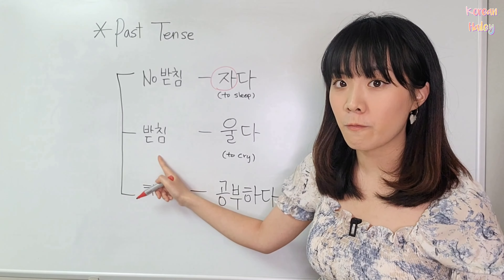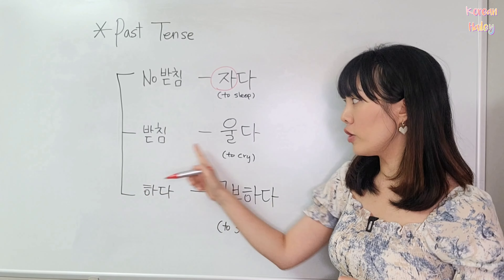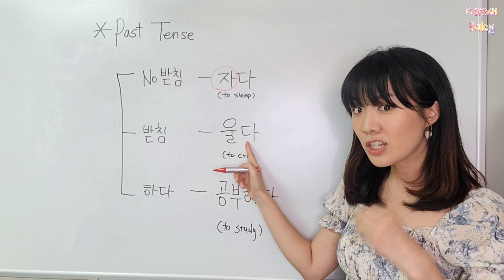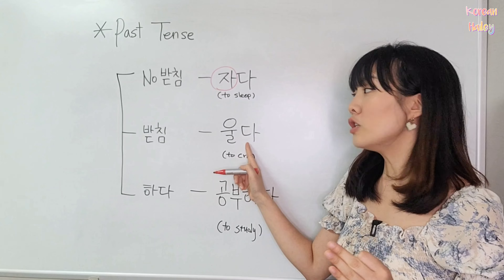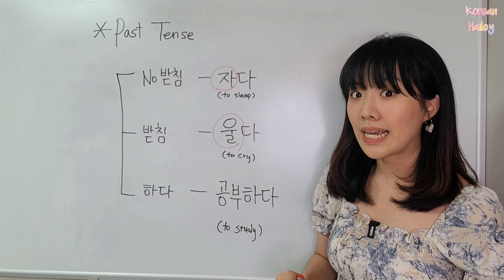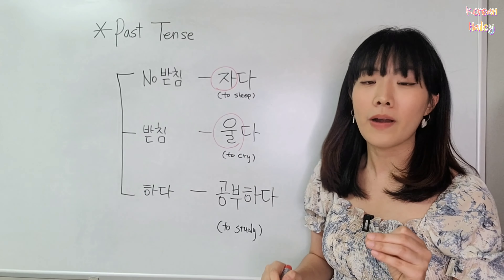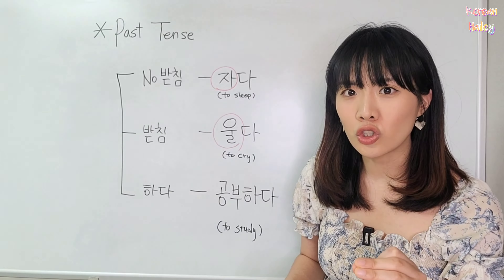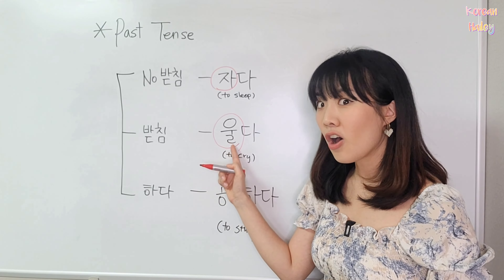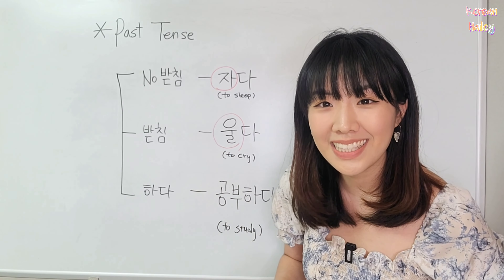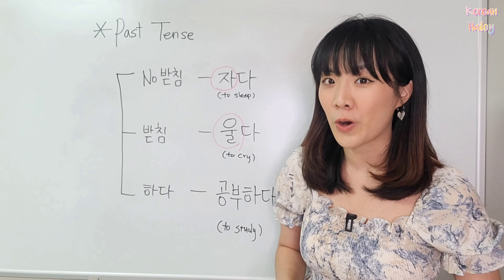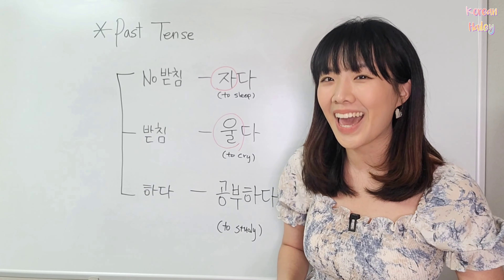This is the 받침 verb. 다 is just the dictionary part, so let's look at the meaning part. The meaning part is 울. Look at 울 — this is the 받침. So I call this the 받침 verb.